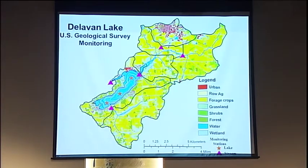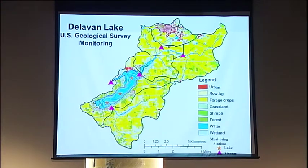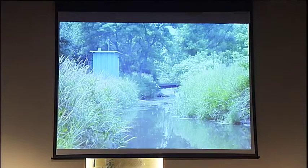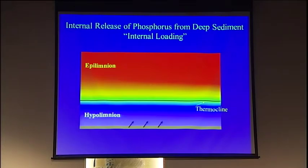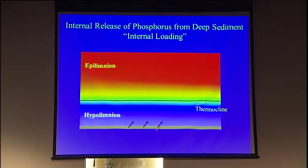We also wanted to figure out where the nutrients were coming from. We went out and put in different sites around the watershed — gauging stations next to streams — to measure how much water and how many nutrients were getting to that lake. The other thing we did was look not just for nutrients coming in from the watershed, but also how many were coming in from the bottom of the lake. This lake has warm water sitting on top of cool water, and phosphorus would start to come out from the bottom — very similar to what we heard about with the alum treatment — and we wanted to quantify that as well.